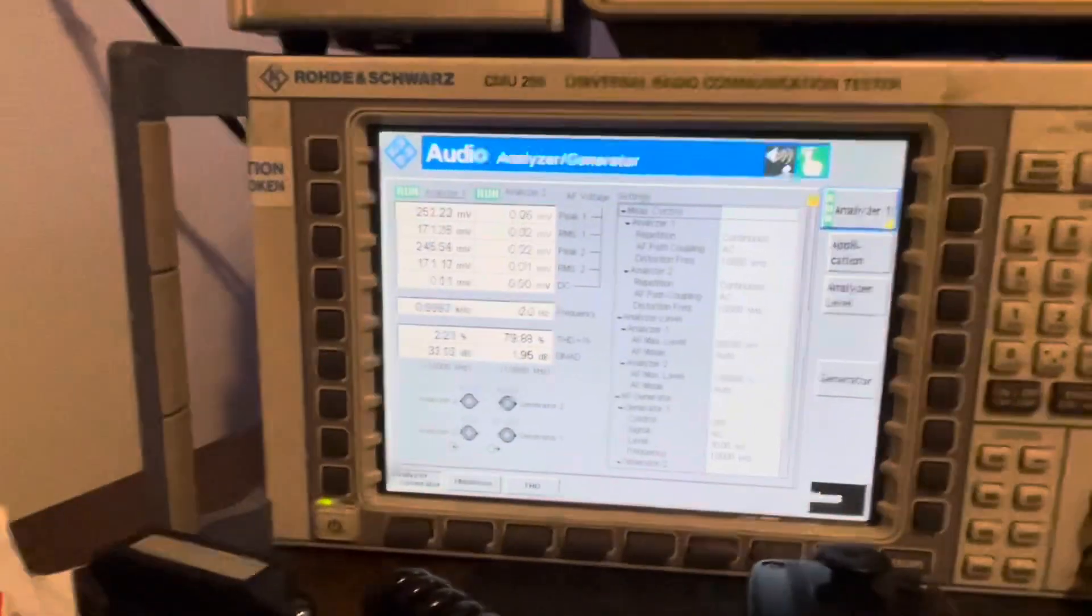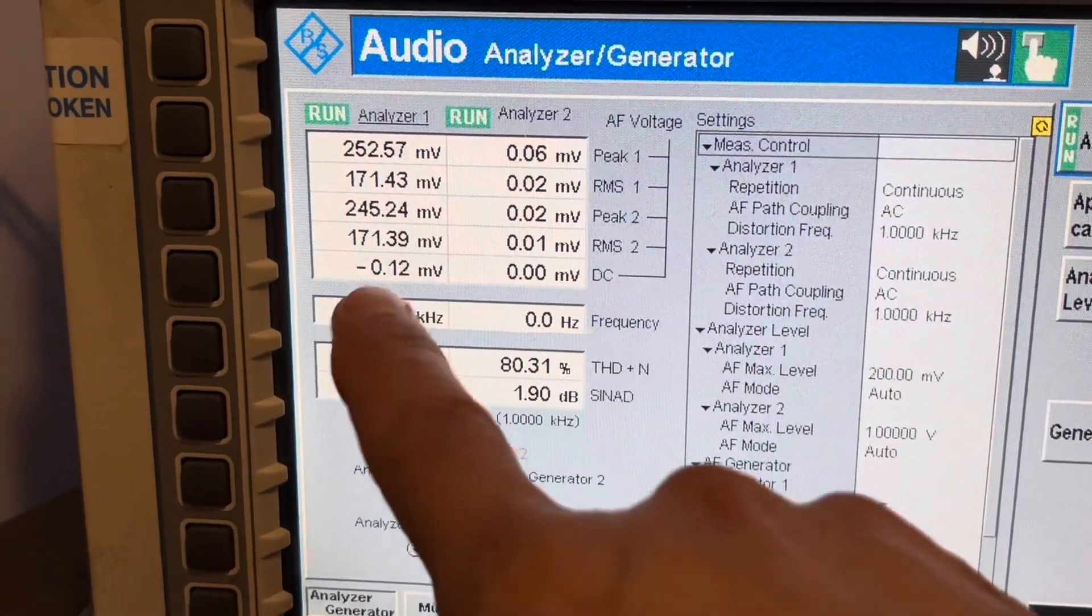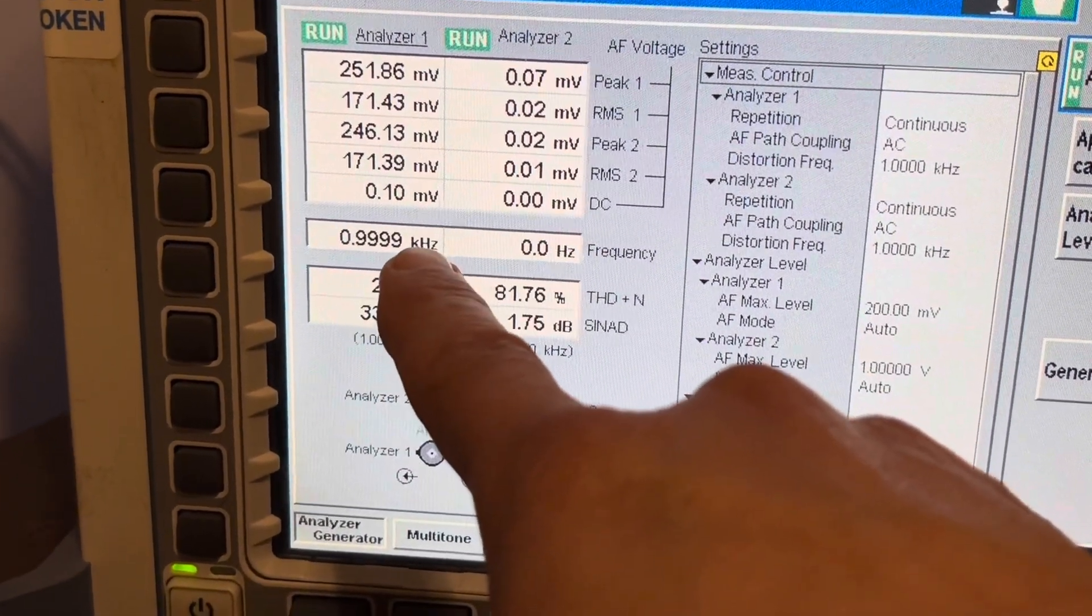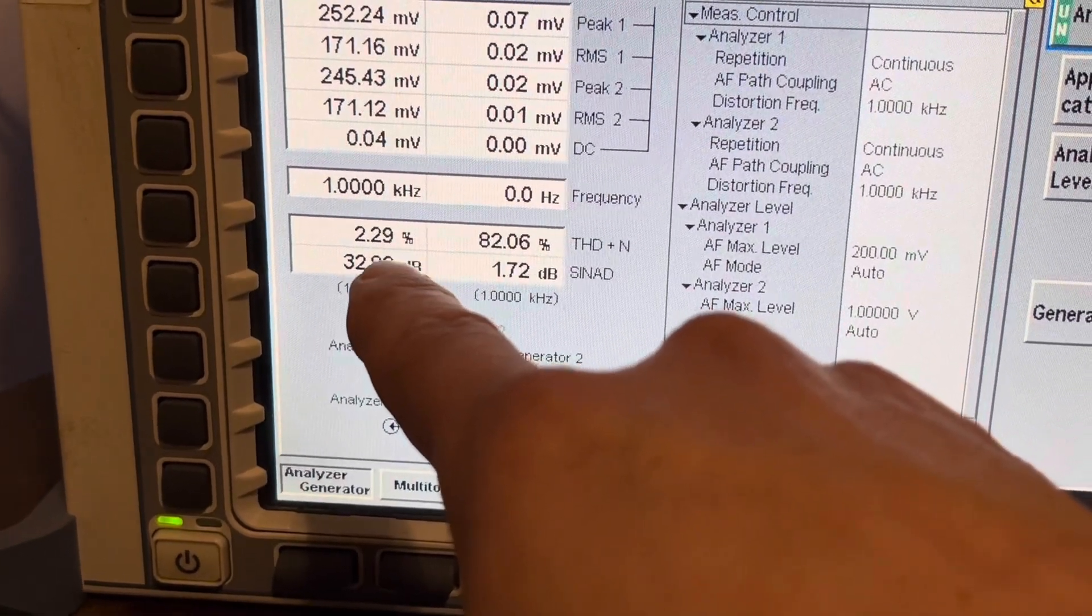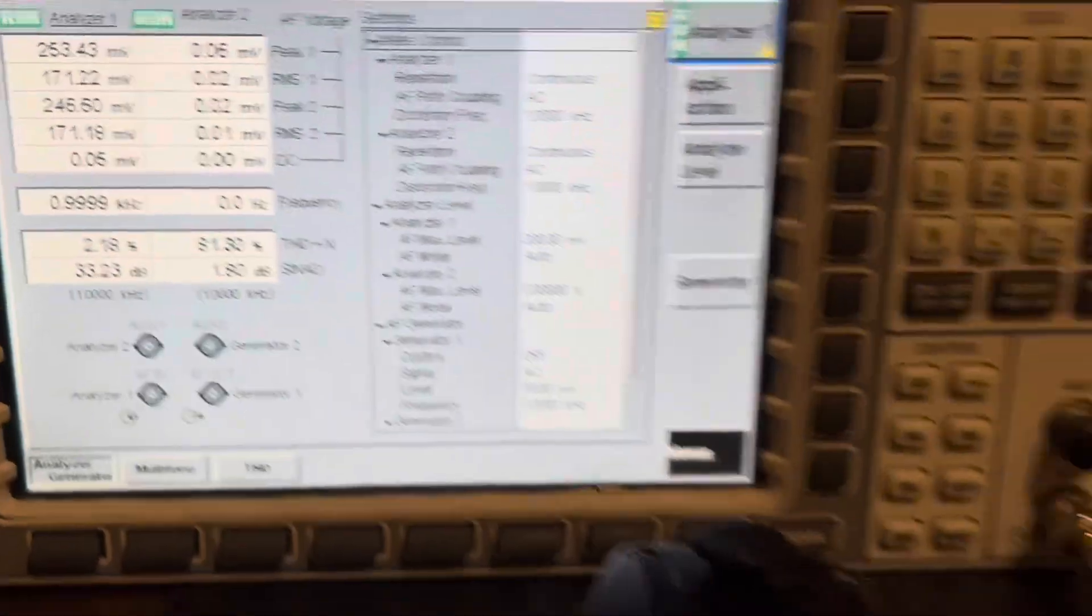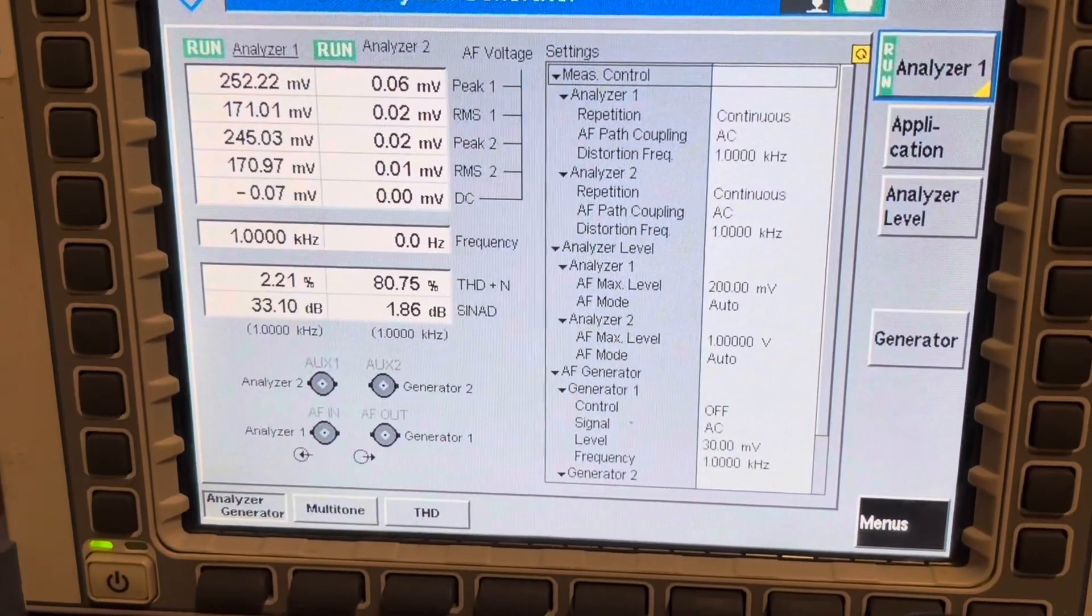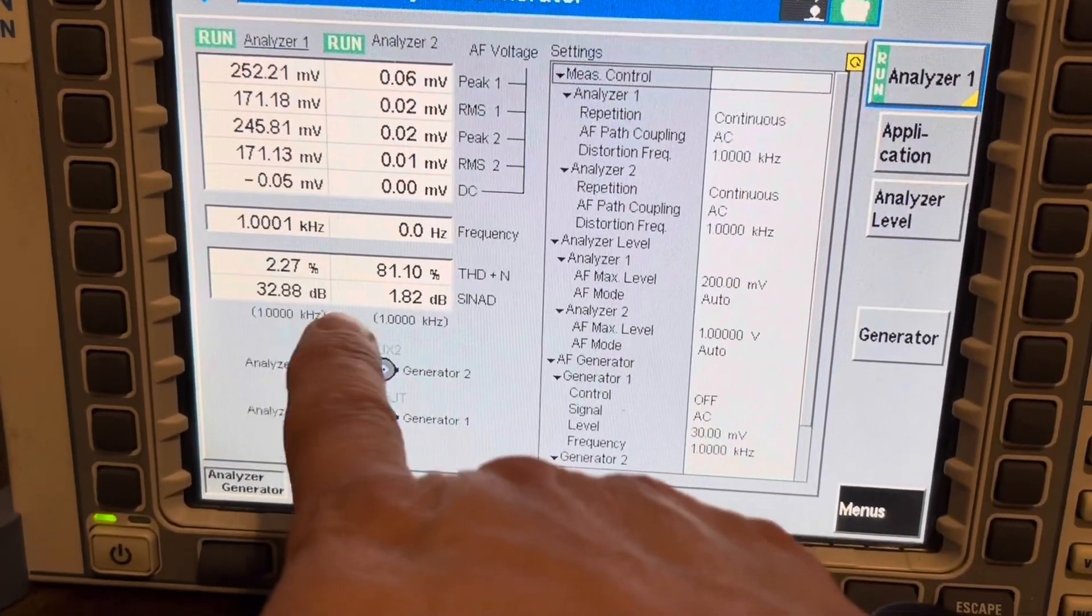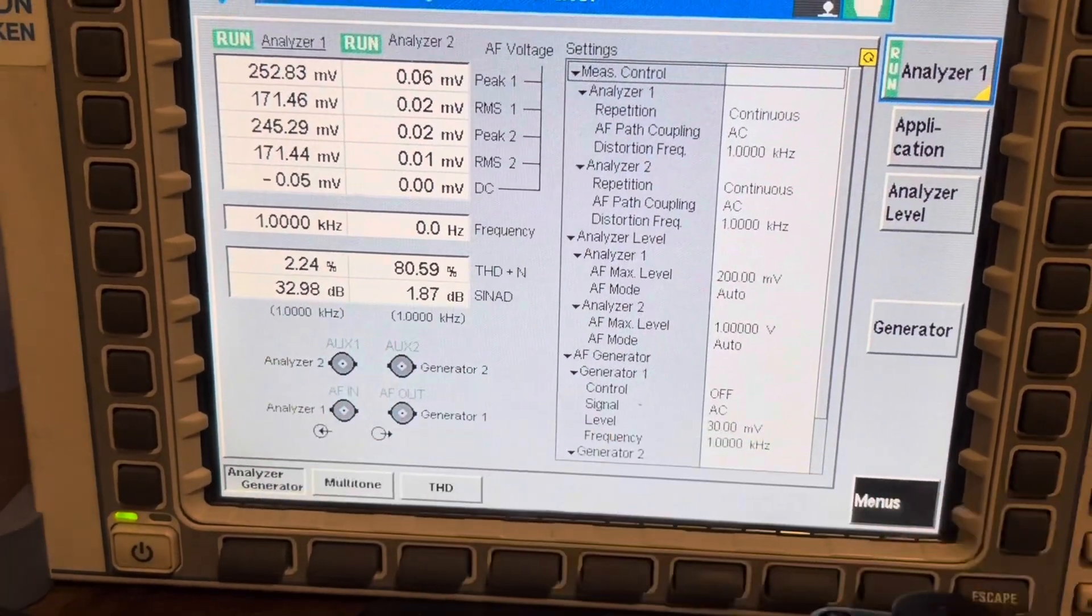All right, so now we're inputted into the CMU 200 and you can see there that we are at a level about 170 millivolts. There's our tone input and then here is our percentage of THD, two percent. So the TDM-1911 was saying about one point two or one point three percent distortion and this is showing that we're at about two percent distortion. There's our SINAD reading right there which is pretty normal for a signal level that we're inputting into the radio, a pretty strong SINAD reading of 33 dB.